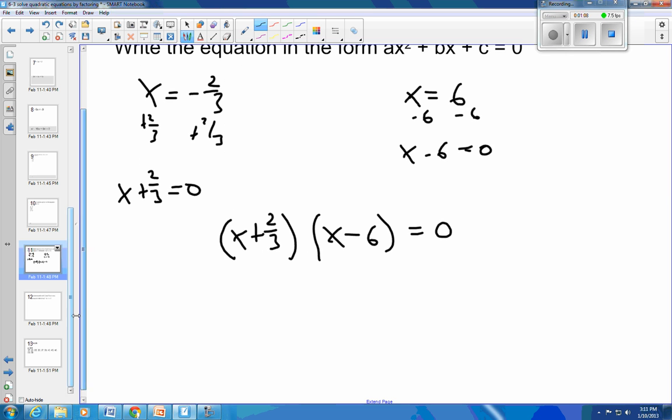And then I'm going to FOIL. So x times x is x squared. x times negative 6 is minus 6x. 2 thirds times x is plus 2 thirds x. And 2 thirds times 6, so that's 2 times 6 is 12 divided by 3 is 4. So that's going to be minus 4.